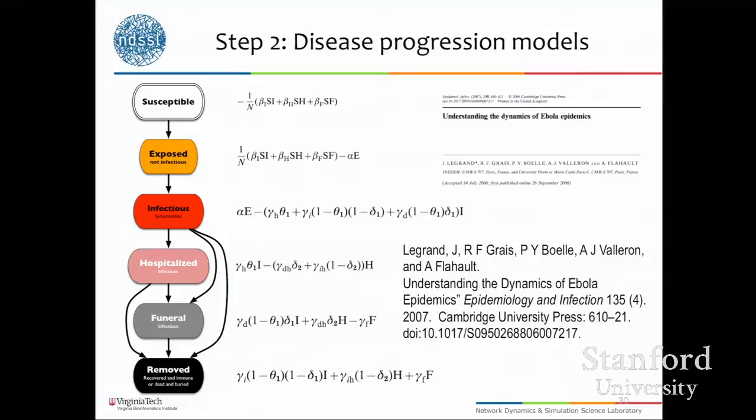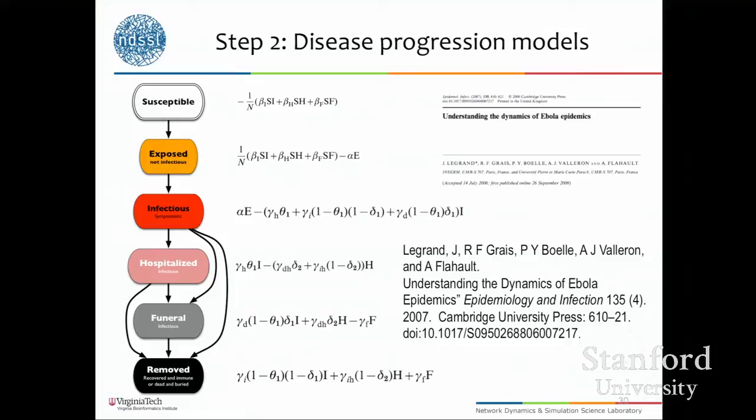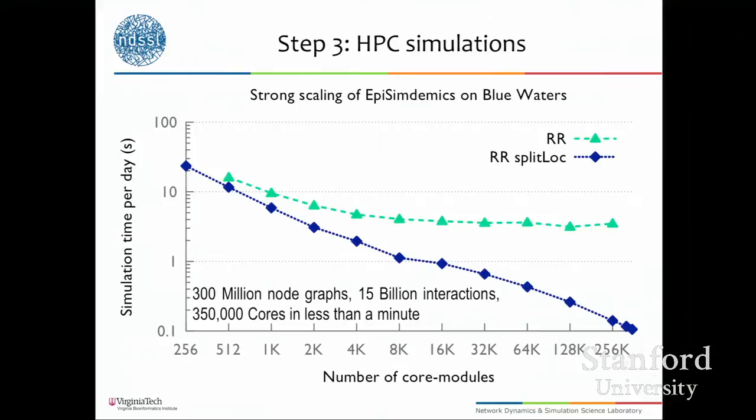We then build disease progression models, using machine learning techniques to look at data from limited experiments — data captured in small households — and try to assess disease parameters for within-host transmission. We then do simulations of how the disease would spread through these networks, and we've had to use high performance computing platforms.